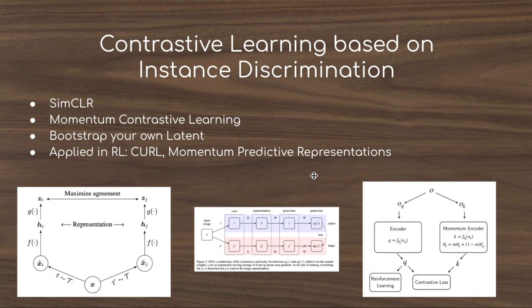This contrastive framework has also been successful in reinforcement learning. When doing tasks like OpenAI Gym or the DeepMind control suite — trying to do control from visual input — you can take stacks of frames and add an auxiliary self-supervised learning task. This learns better representations of the high-dimensional images, which then facilitate learning a policy or value function for the reinforcement learning task.